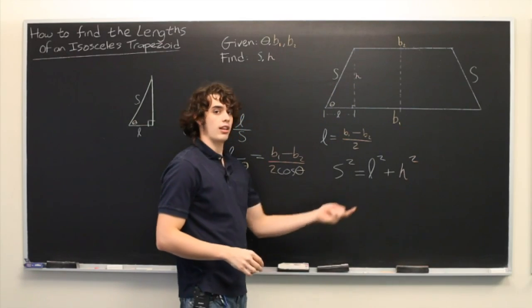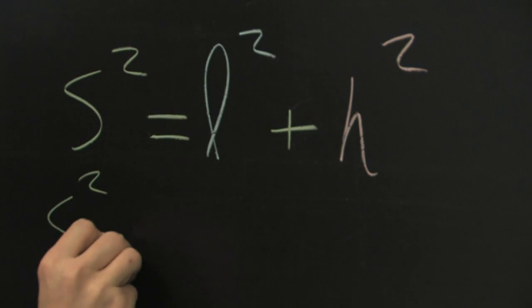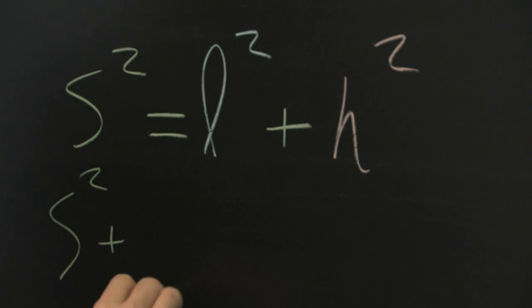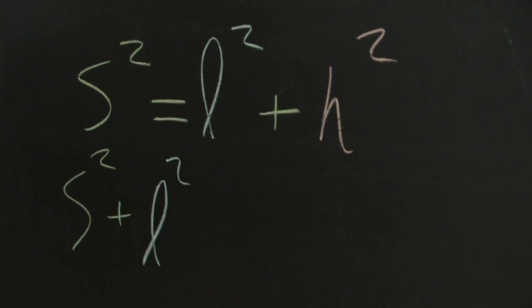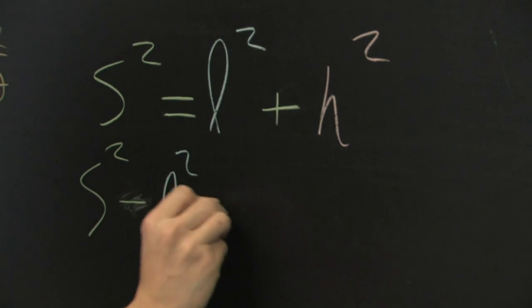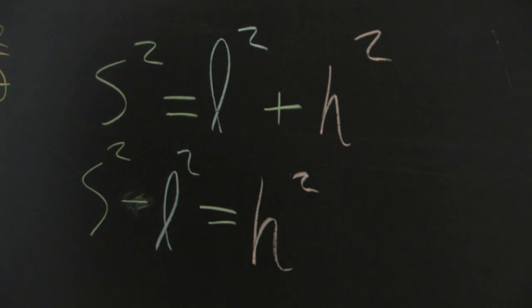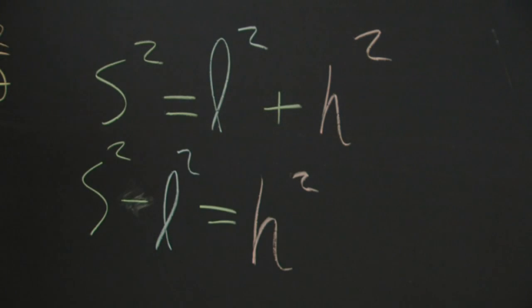From here, we can simply subtract L squared from both sides. We get S squared minus L squared equals H squared. And from here, we can take the square root of both sides to arrive at an explicit formula for H.